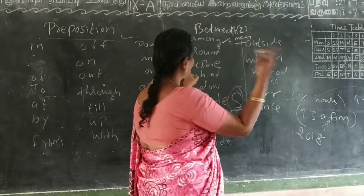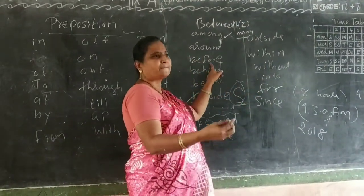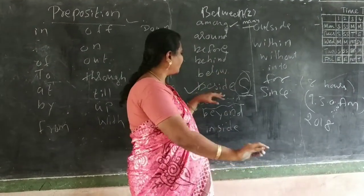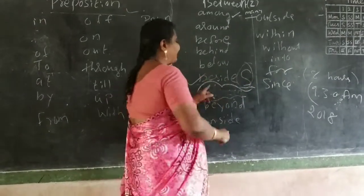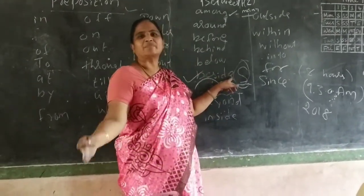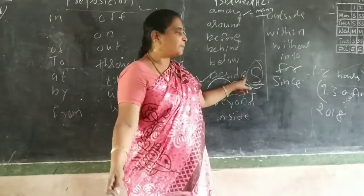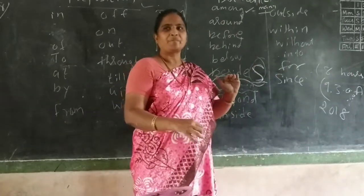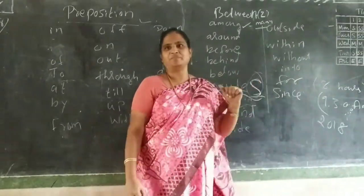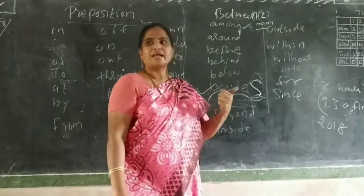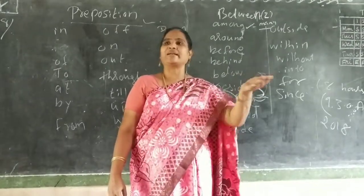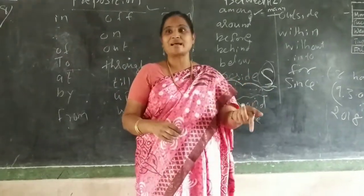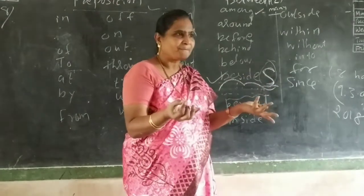Around, before, behind, below, down. Also, beside and besides — these are different. 'Beside' means nearby. Whereas 'besides' means 'in addition to.' For example: besides English, I know Malayalam; besides Tamil, I know French. Besides this car, I have another car — so 'besides' means in addition to something else.